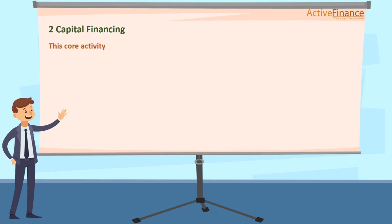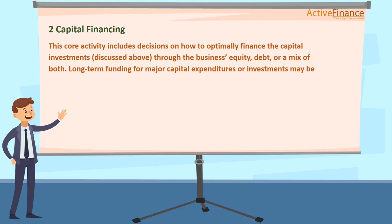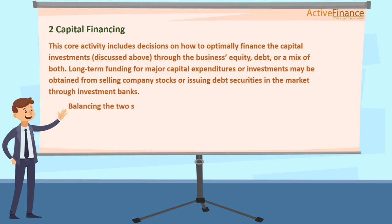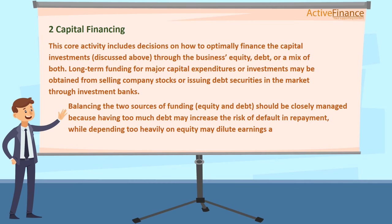2. Capital Financing: This core activity includes decisions on how to optimally finance the capital investments through business equity, debt, or a mix of both. Long-term funding for major capital expenditures or investments may be obtained from selling company stocks or issuing debt securities in the market through investment banks. Balancing the two sources of funding, equity and debt, should be closely managed because having too much debt may increase the risk of default in repayment, while depending too heavily on equity may dilute earnings and value for original investors.